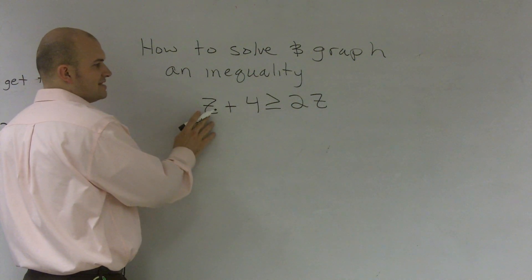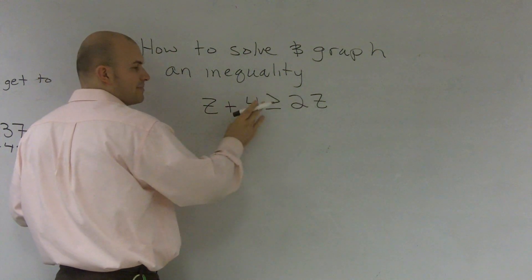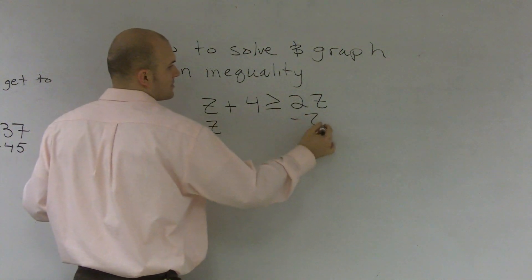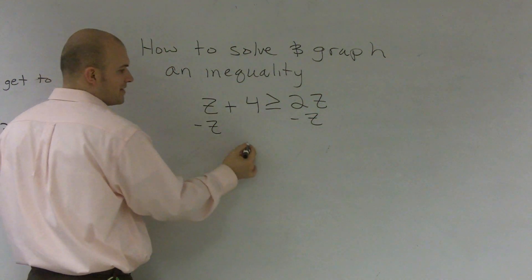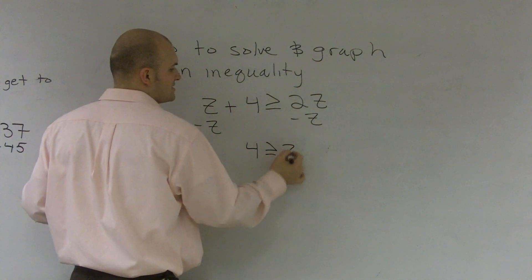What I notice is if I get rid of the z, I'll have the z on the right side and my numbers on the left side more perfectly. I'm going to subtract the z on both sides. That becomes 0, so I'm left with 4 is greater than or equal to 2z minus z is z.